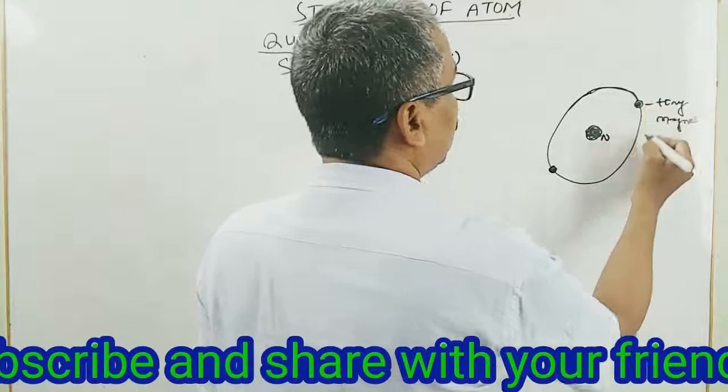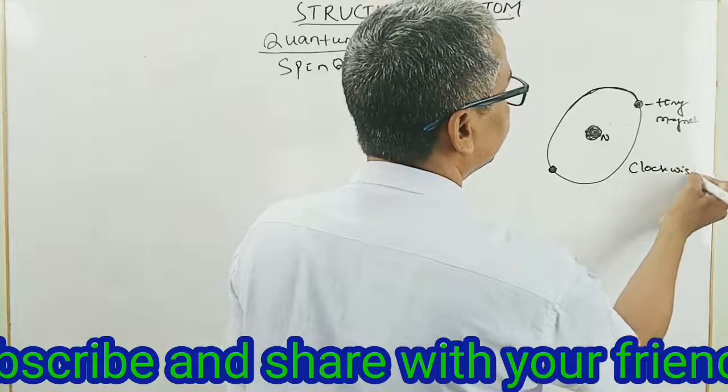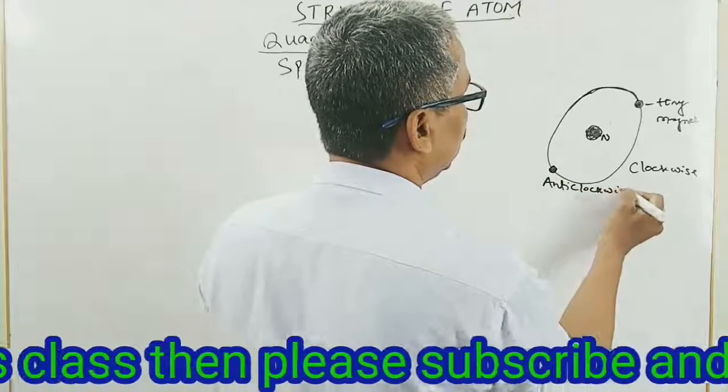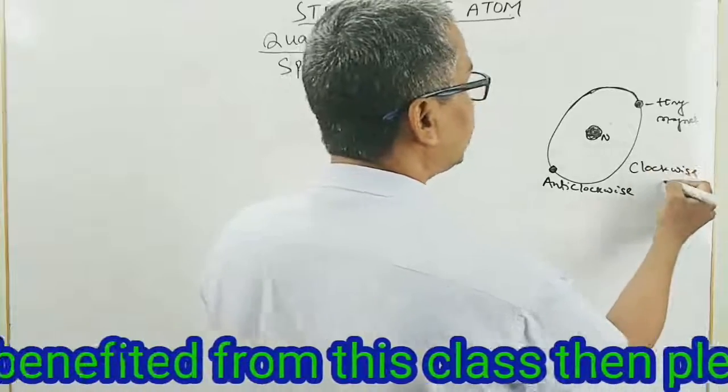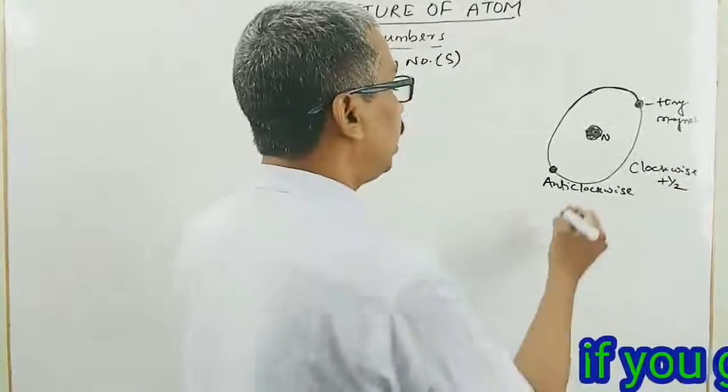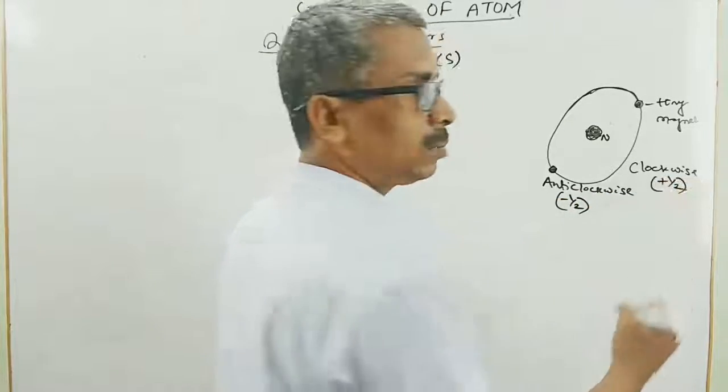Agar this is moving in clockwise, this will move in anti-clockwise. And this clockwise represents as plus half spin quantum number, and anti-clockwise this is minus half spin quantum number.